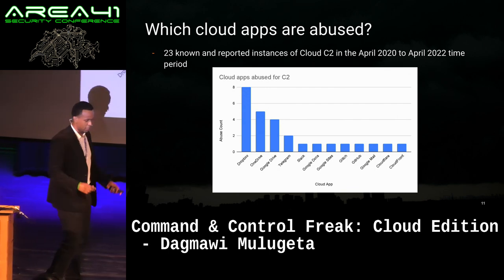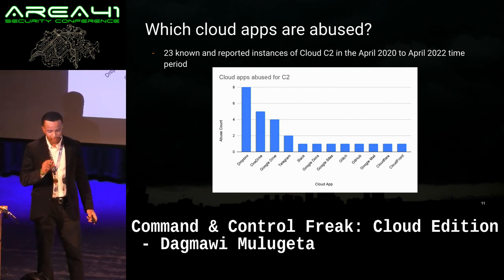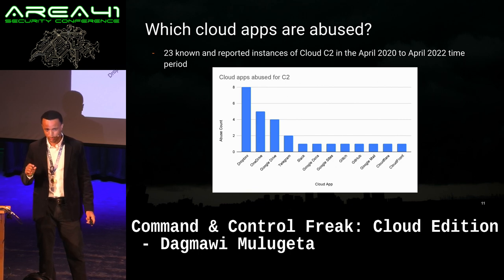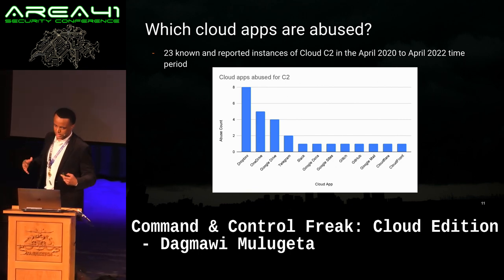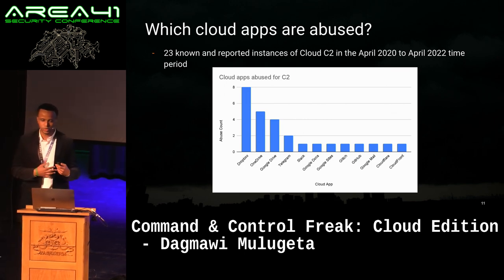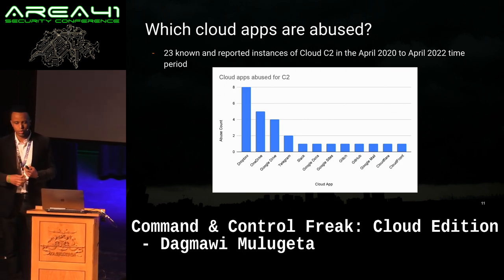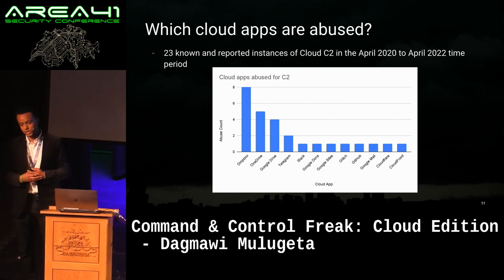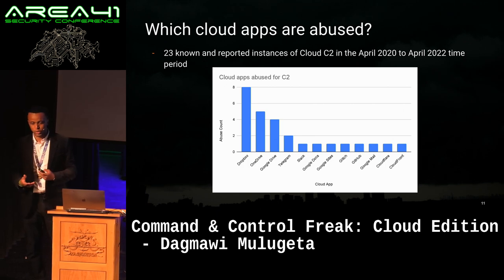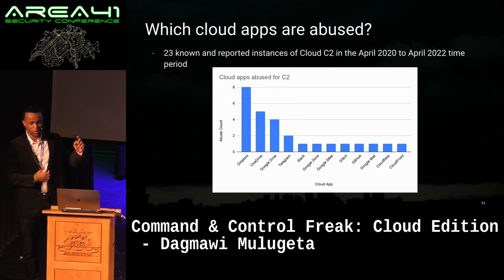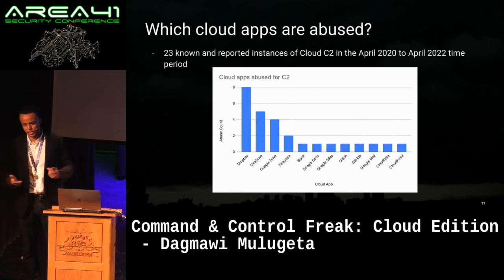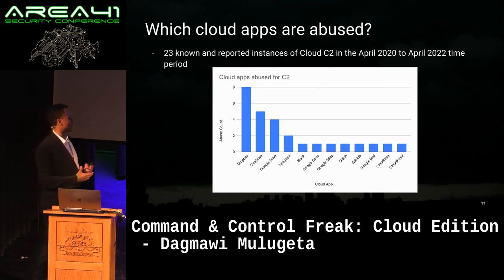In the previous slide we looked at specific instances of abuse, but we also wanted to see some aggregate insights. We looked at 23 known and reported instances of abuse over a two-year period from April 2020 to April 2022. These are just known and reported instances, so there are likely many more that haven't been reported, but we started with these.